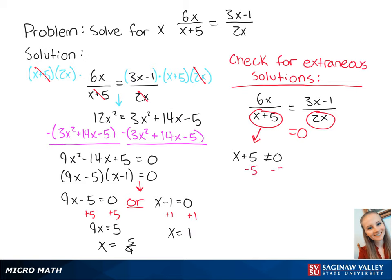If we subtract both sides by 5, we get x cannot equal negative 5. Then we're going to create an equation where 2x cannot equal 0. If we divide both sides by 2, we get x cannot equal 0.